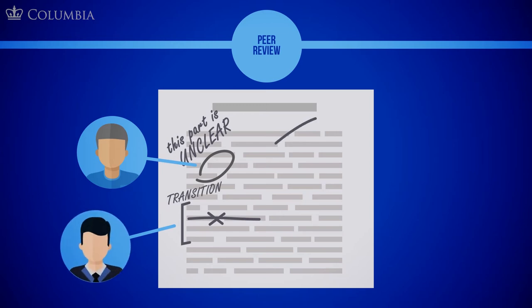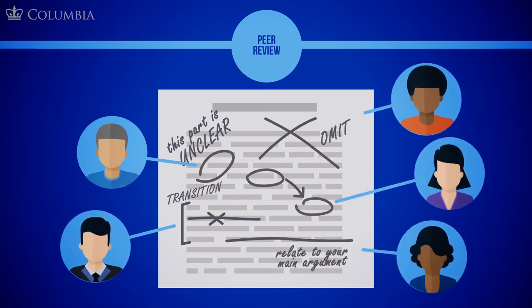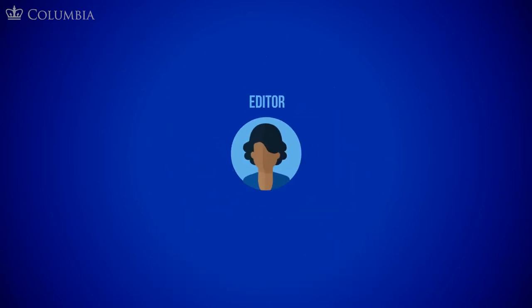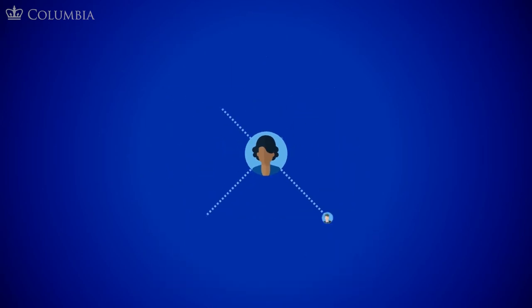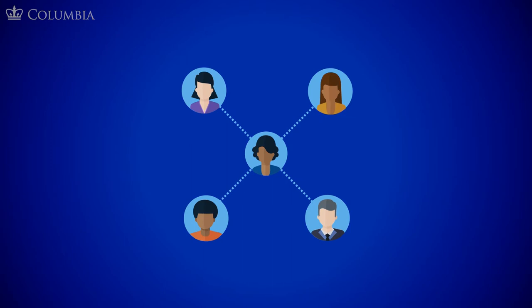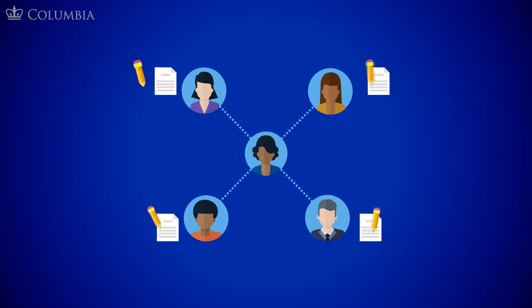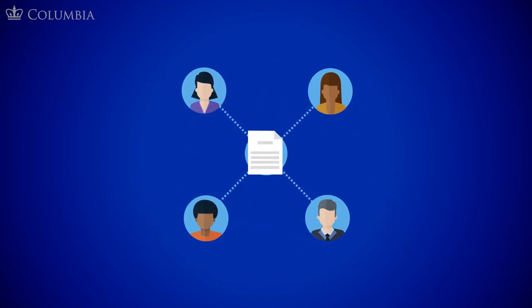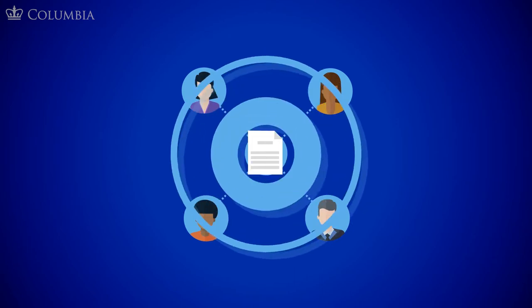The quality of academic publications is ensured through a process called peer review. You might be familiar with peer review from a classroom setting, in which students swap papers to get suggestions for improvement. In academic publishing, peer review is a similar practice — editors send new articles and books to peer reviewers, experts in the author's field, so that they can vet the content and offer comments and edits to the author before publication.